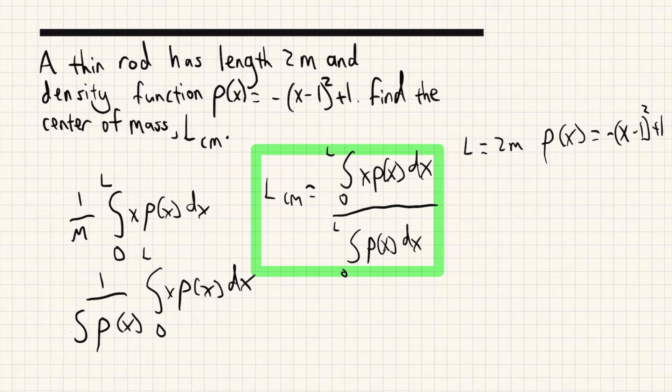So for this problem, we know that the length is 2 meters and the density function ρ(x) is -(x-1)² + 1. So let's plug that into the formula.